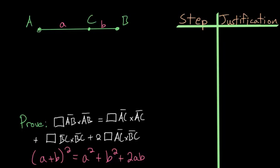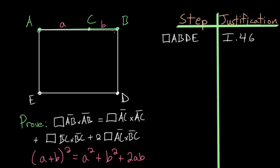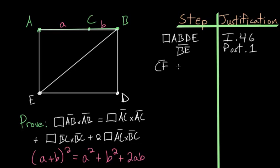To start this proof, let's first construct a square on the line AB, labeling this point as E and this point as D. So we've constructed the square ABDE using Book 1 Proposition 46. Now let's connect points B and E, which we can do because of Postulate 1 — we can draw a straight line between any two points. Then let's construct a line CF that is parallel to the line BD, using Book 1 Proposition 31.